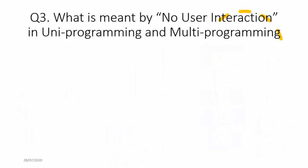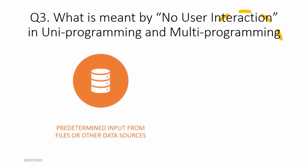Always remember that in uniprogramming and in multiprogramming there is no user interaction. What does this mean? No user interaction means that all the input required by the program at any point during its execution must be pre-supplied along with the program. For example, if you write a C program with a printf 'enter name' statement and a scanf to get input from the user, when you execute this program and the control reaches that printf, you type in the name from the keyboard.